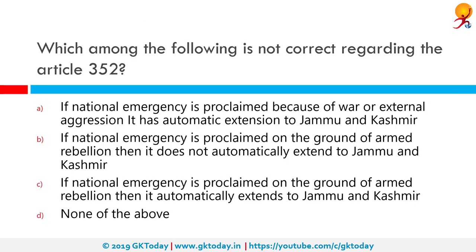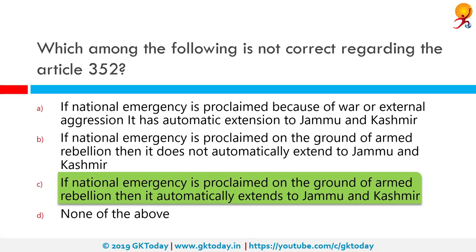Which among the following is not correct regarding Article 352? The correct answer is: if a national emergency is proclaimed on the ground of armed rebellion, it automatically extends to Jammu and Kashmir. This is not correct. Article 352 states that a national emergency can be declared on the basis of external aggression or armed rebellion in the whole of India or a part of its territory. Such an emergency was declared in 1962 during the Sino-Indian war, in 1971 during the India-Pakistan war, and in 1975 when it was declared by Prime Minister Indira Gandhi.